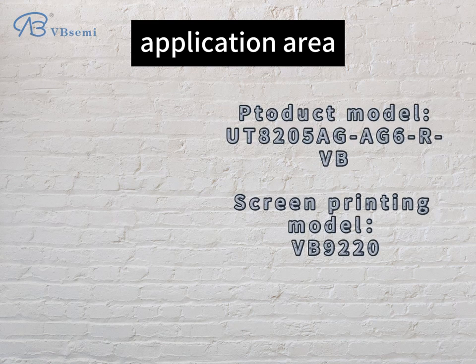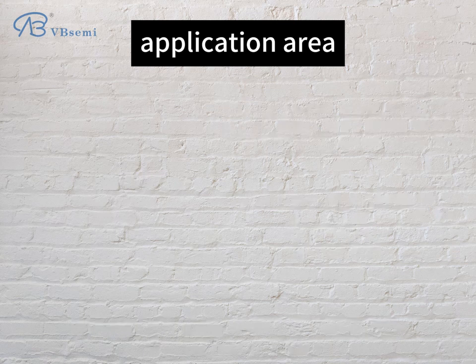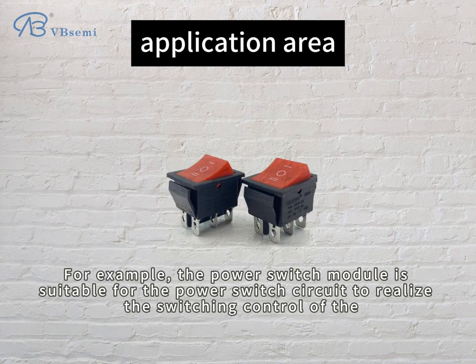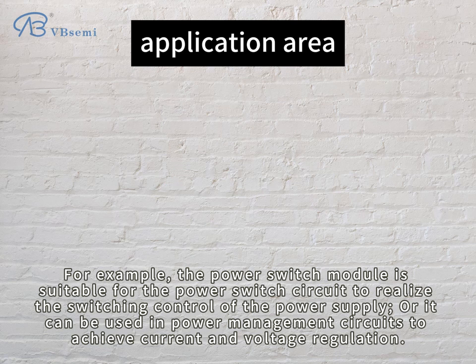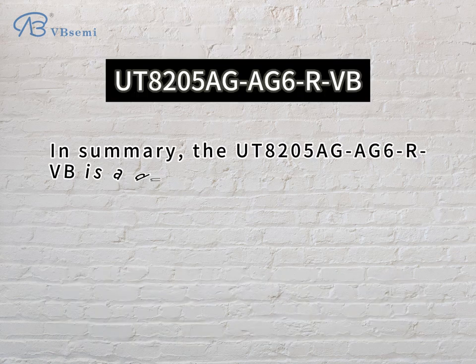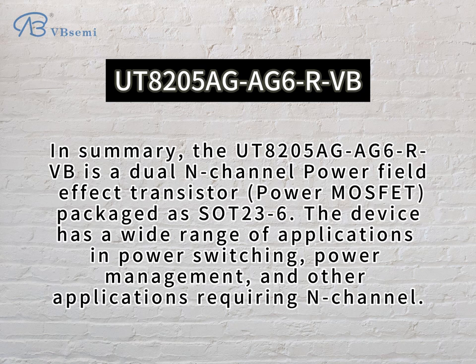Application area: UT8205 AGAG6RVB is suitable for various fields. For example, the power switch module is suitable for power switch circuits to realize switching control of the power supply, or it can be used in power management circuits to achieve current and voltage regulation. In summary, the UT8205 AGAG6RVB is a dual N-channel power field effect transistor MOSFET packaged as SOD23-6.